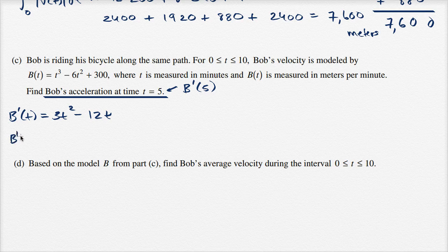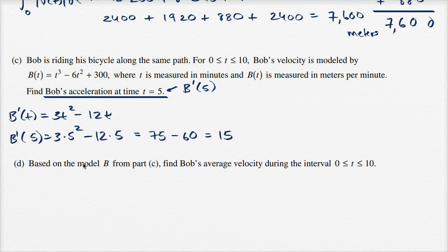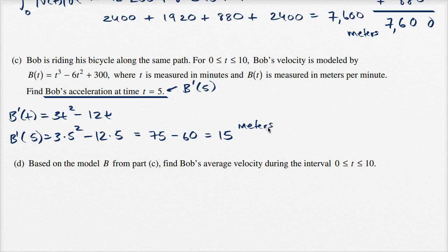And so b prime of 5 is going to be equal to 3 times 5 squared minus 12 times 5, which is equal to 75 minus 60, which is equal to 15. The units here — this is acceleration — his velocity was in meters per minute, so this is going to be meters per minute per minute, or meters per minute squared.